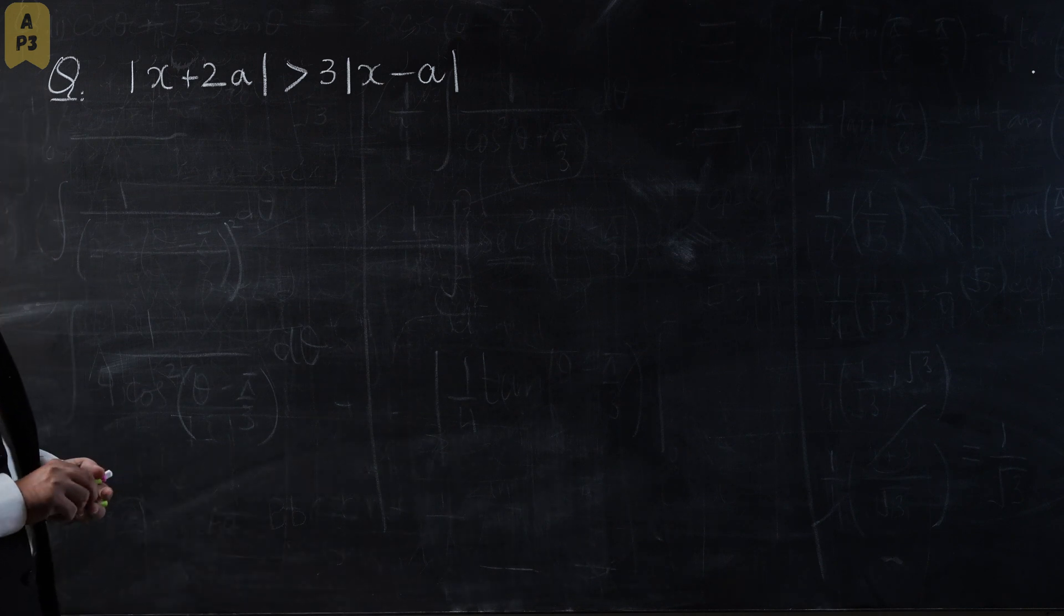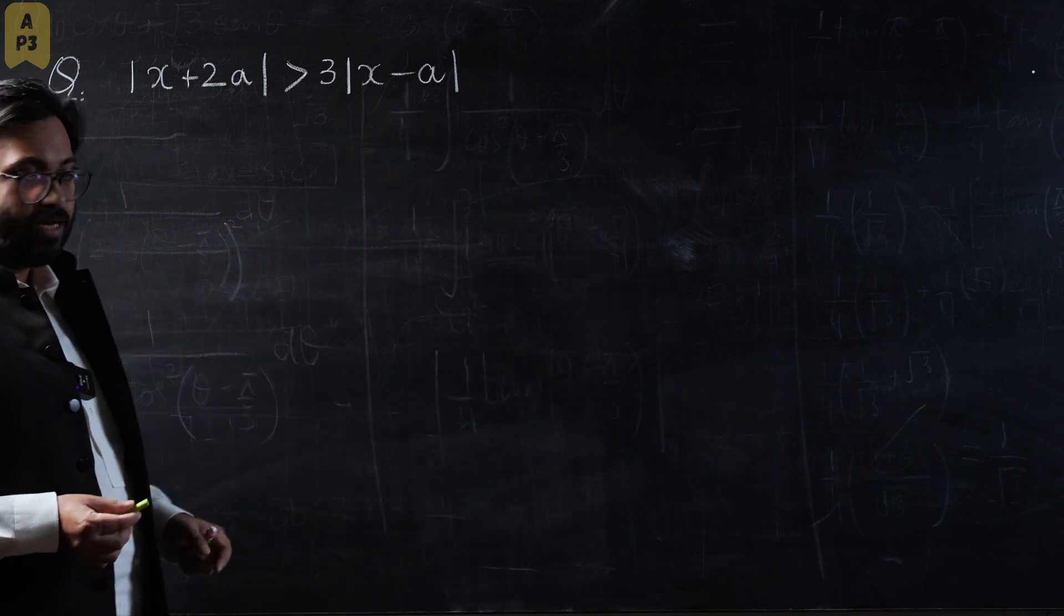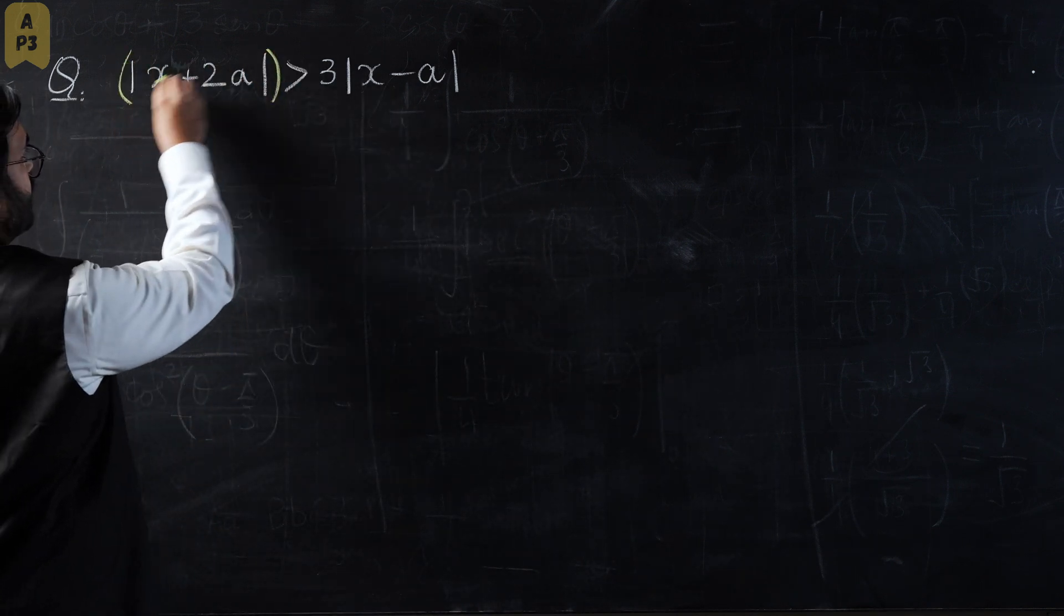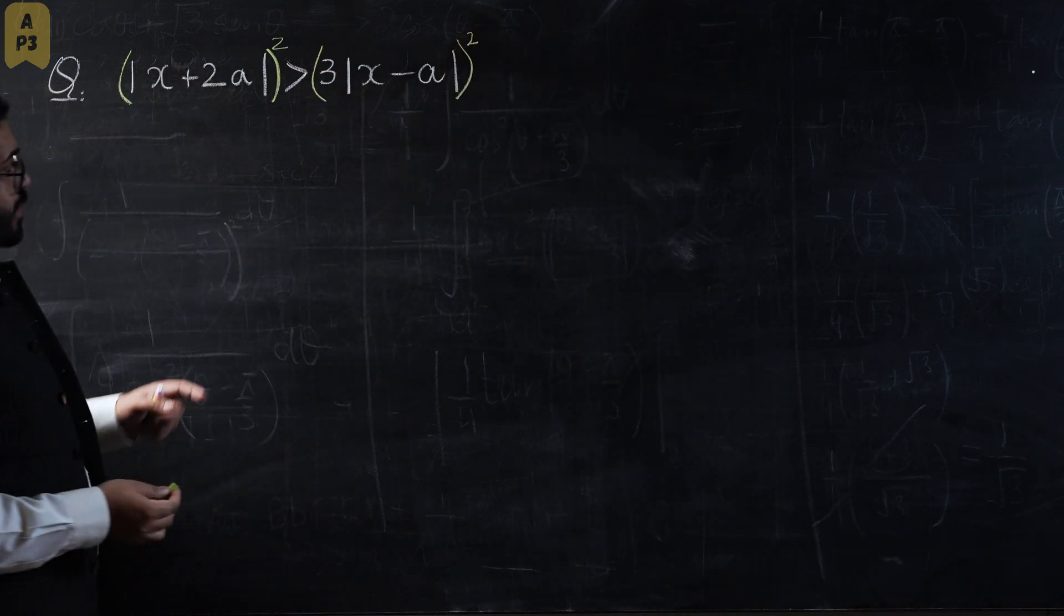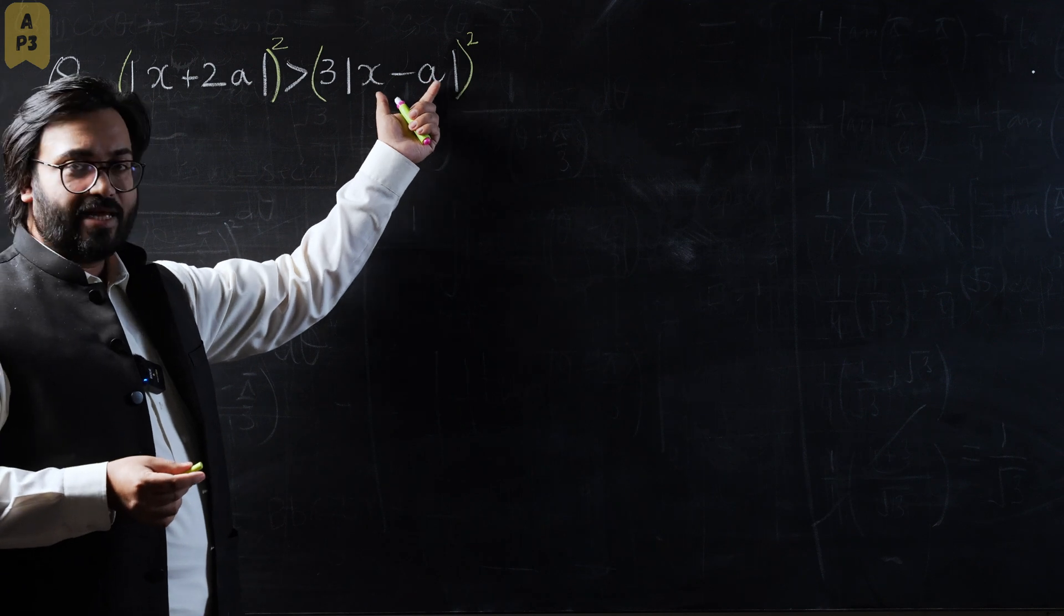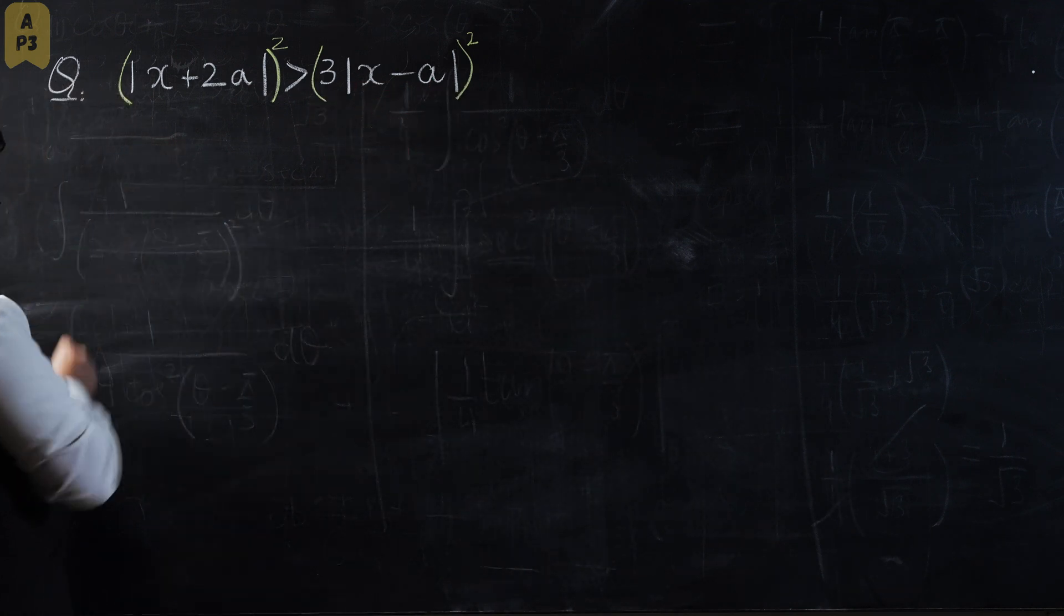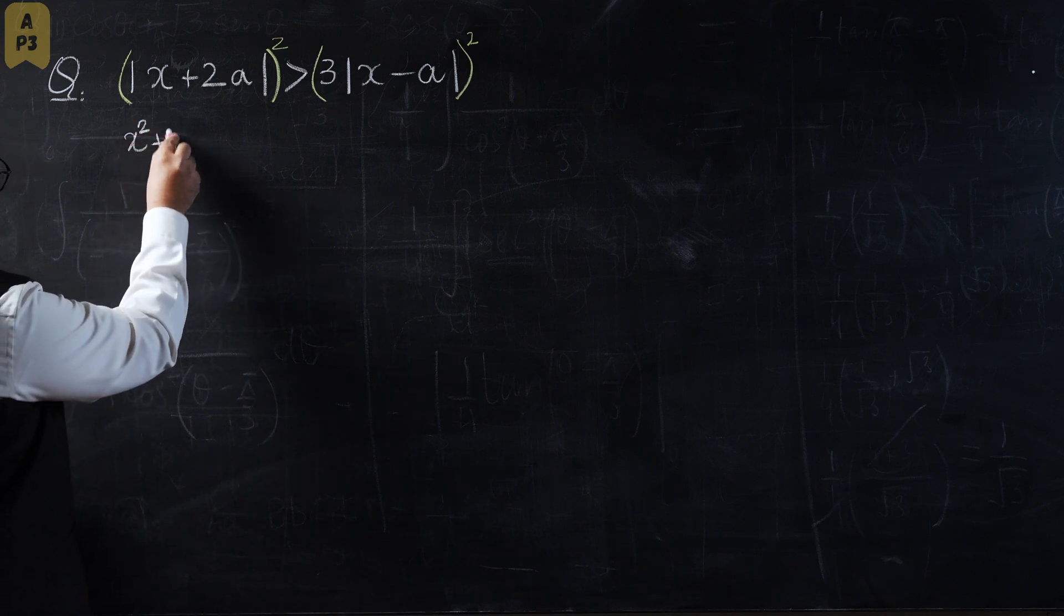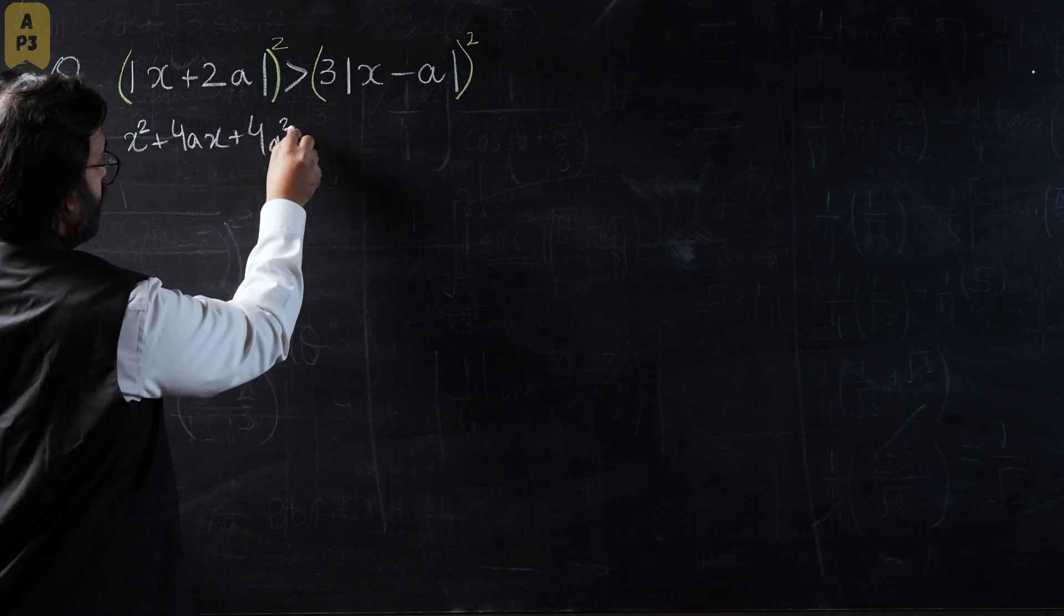We know that the best way to deal with modulus when we have both sides with a modulus on an inequality is to take a square on both sides. What a square does is it neutralizes the effect of the positive and the negative outside the modulus function.